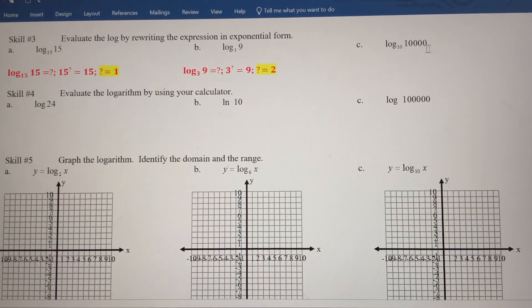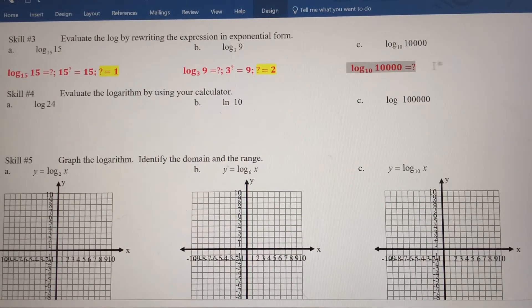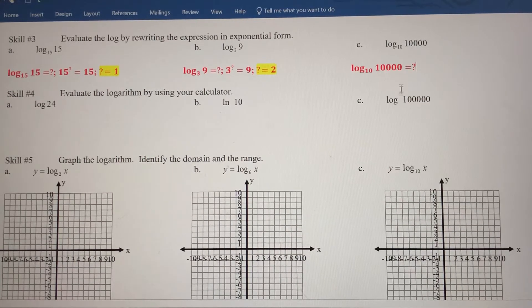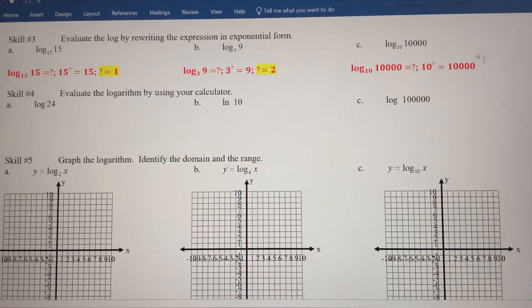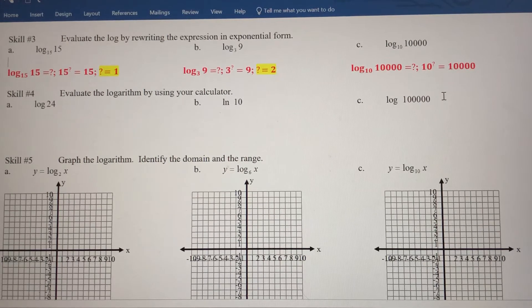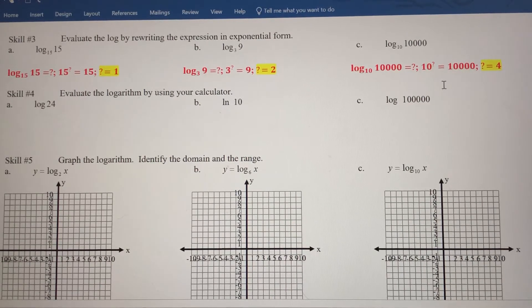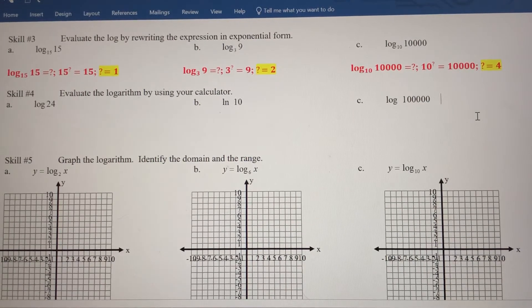And finally here, log base 10 of 10,000. So log base 10 of 10,000 is equal to what? Let's rewrite this in exponential form. So 10 to what power is going to be 10,000? Well, 10 to the first power is 10, 10 to the second power is 100. You keep going. 10 to the fourth power would be 10,000. There's four zeros here, so that's why it's the fourth power.